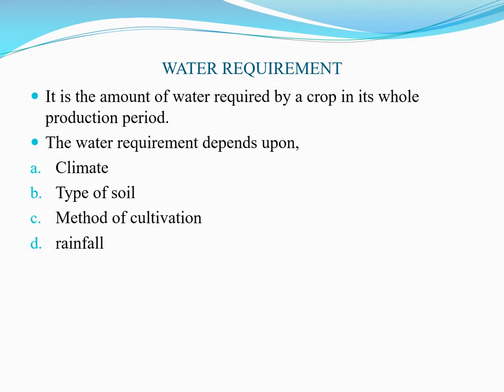The third factor is method of cultivation — whether the cultivation method is extensive or intensive. This is also a main factor that directly affects the water requirement. The last factor is rainfall — how much rainfall occurs and whether the rainfall is conventional or absent. Depending on this, the water requirement may vary.